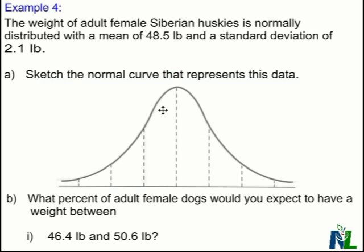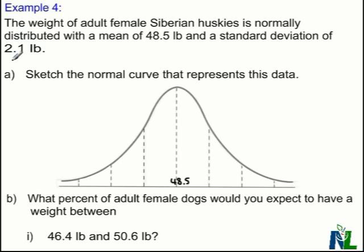With a sketch of the normal curve, the first thing to do is label the mean. The mean will be right at the center, so I'll place 48.5 at the center of my normal curve. Then I'll need to move out by values of the standard deviation — this determines my scale or step size.